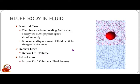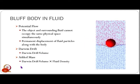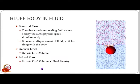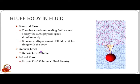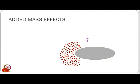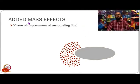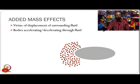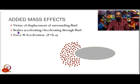The added mass forces or moments are essentially the product of the Darwin drift volume and the fluid density. Added mass effects occur by displacement of surrounding fluid, and they happen only when the object is accelerating or decelerating through the fluid. The added mass forces are directly proportional to acceleration: F = ka.